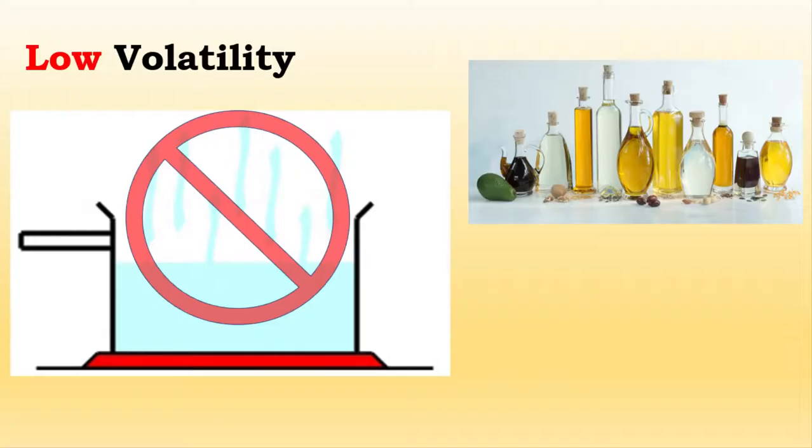On the other hand, a less volatile substance is less likely to readily evaporate and more likely to stay in its liquid form. A less volatile substance will require much more heating and energy in order to transition into a vapor phase. An example of something that has low volatility is vegetable oil. At standard conditions, vegetable oil will remain in its liquid phase.